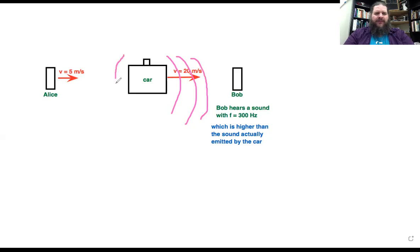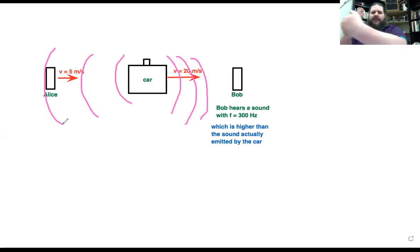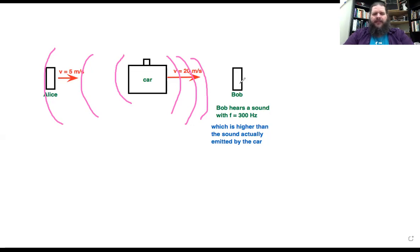The backwards-traveling waves get more and more spread out, because the car emits a wave and then has traveled a little bit before it emits the next wave. So the wave fronts in front get bunched closer and closer together, but the waves behind get more and more spread out. Waves closer together means more wave fronts are hitting Bob per second, so Bob is going to hear a higher frequency. Any questions on that conceptually so far?